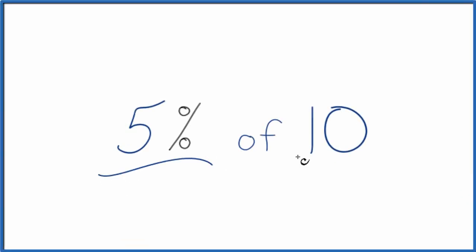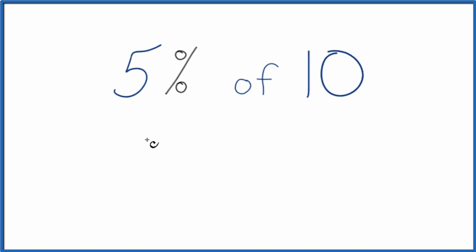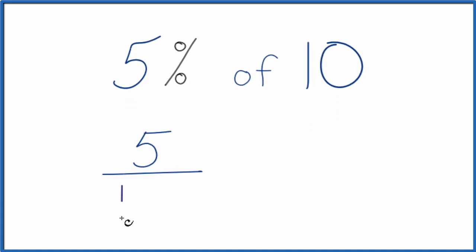Here's how you can find 5% of 10. The way to think about this is that 5%, the percent means per 100. So we have 5 per 100.